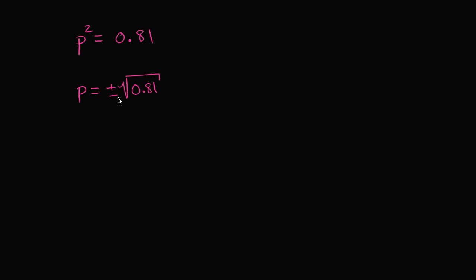So we could write that p is equal to the plus or minus square root of 0.81, which kind of helps us. It's another way of expressing the same equation. But still, what could p be?